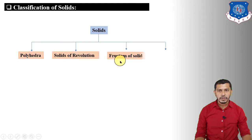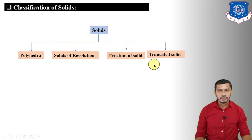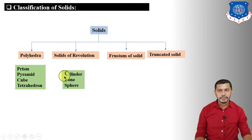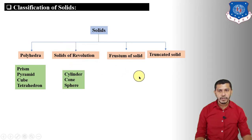Solids are classified into polyhedra, solids of revolution, frustum of solids, and truncated solids. Prism, pyramid, cube, and tetrahedron are polyhedra, whereas cylinder, cone, and sphere are the solids of revolution.